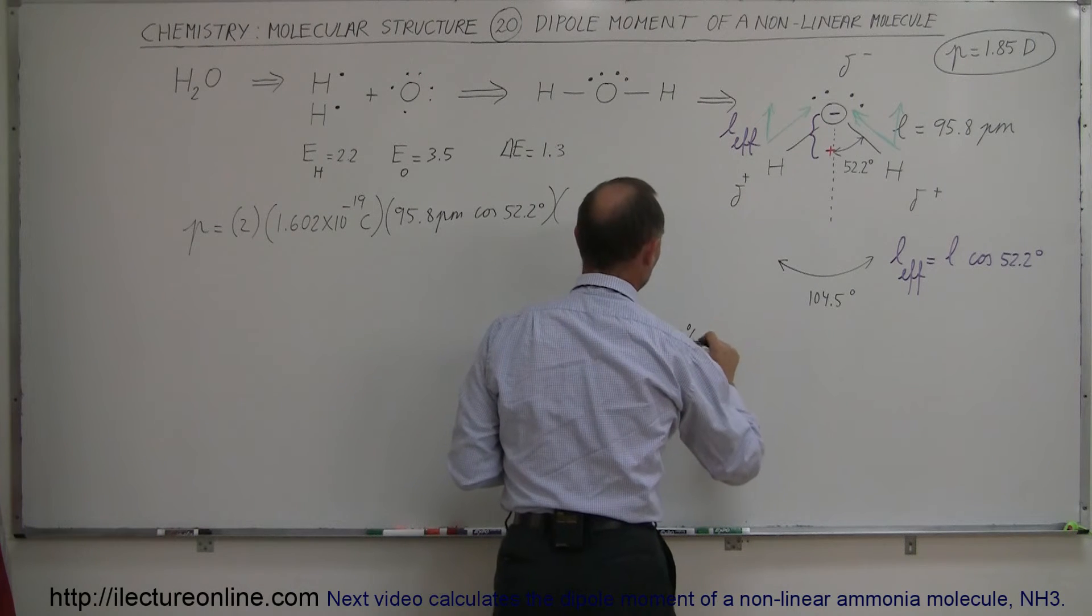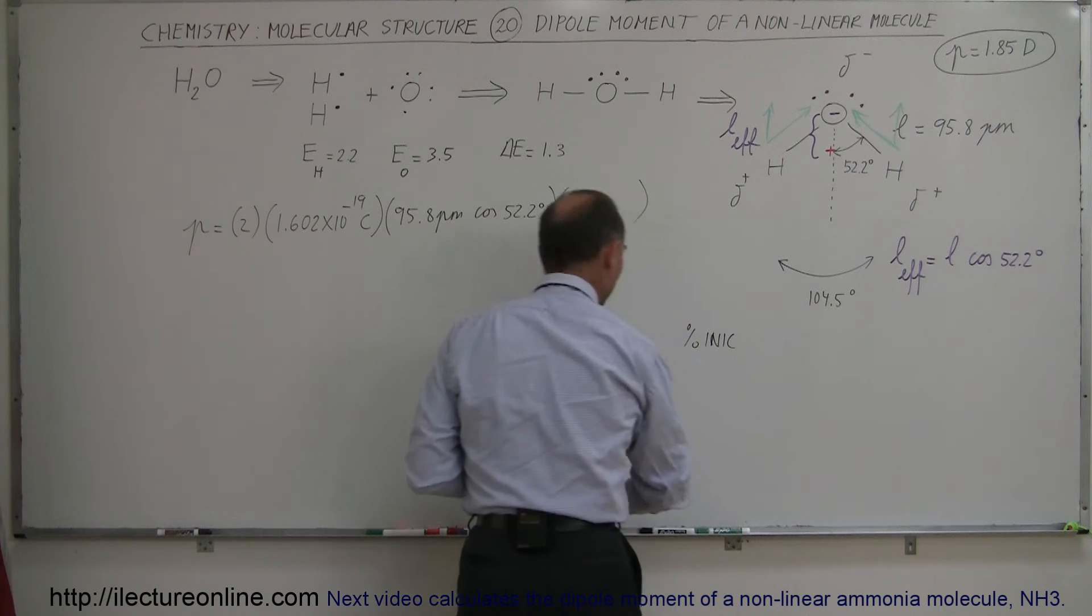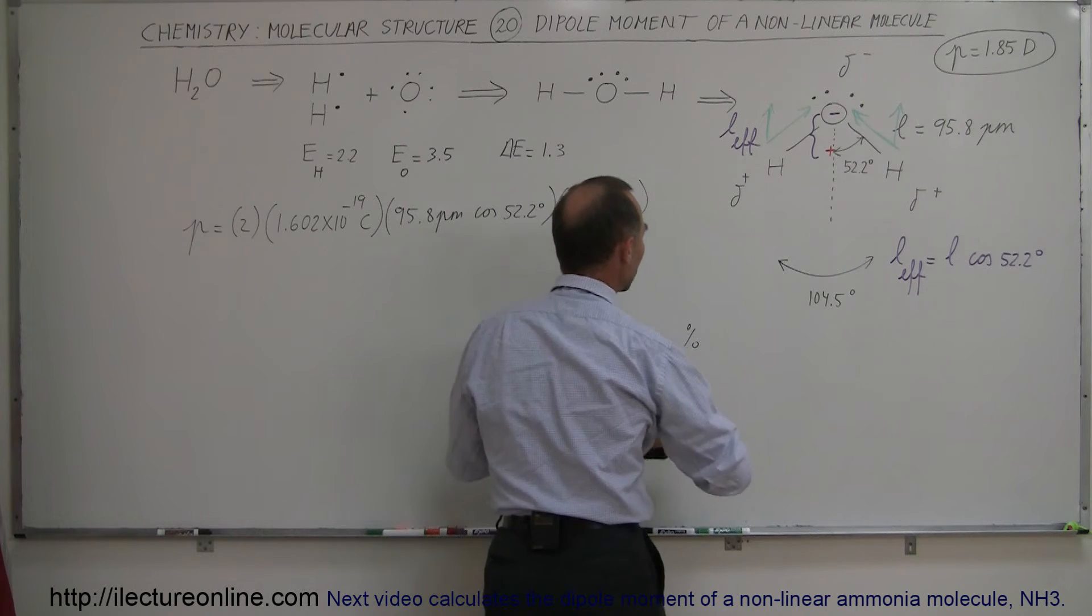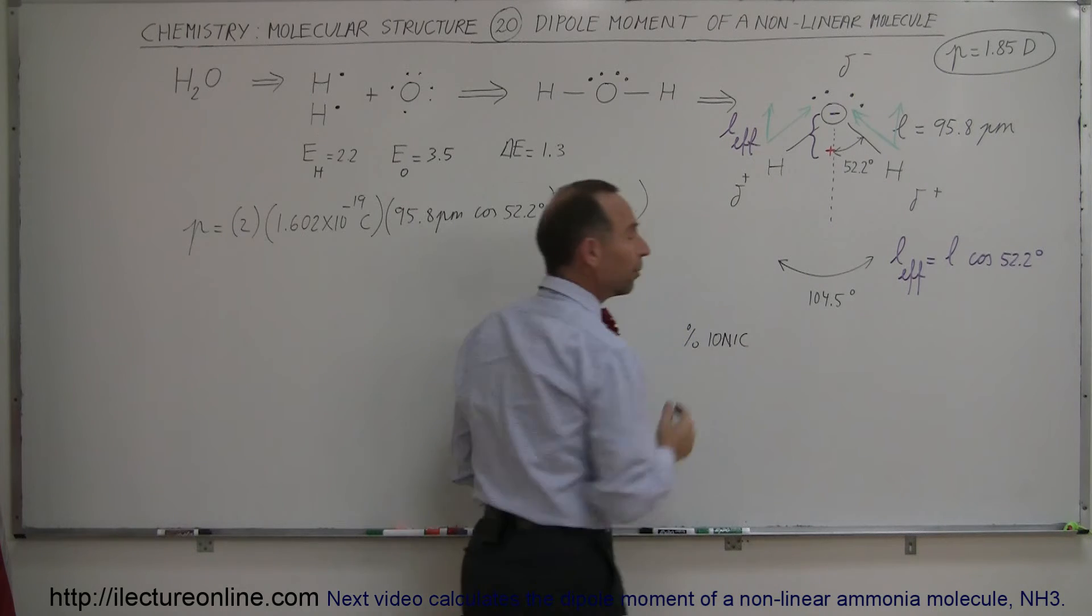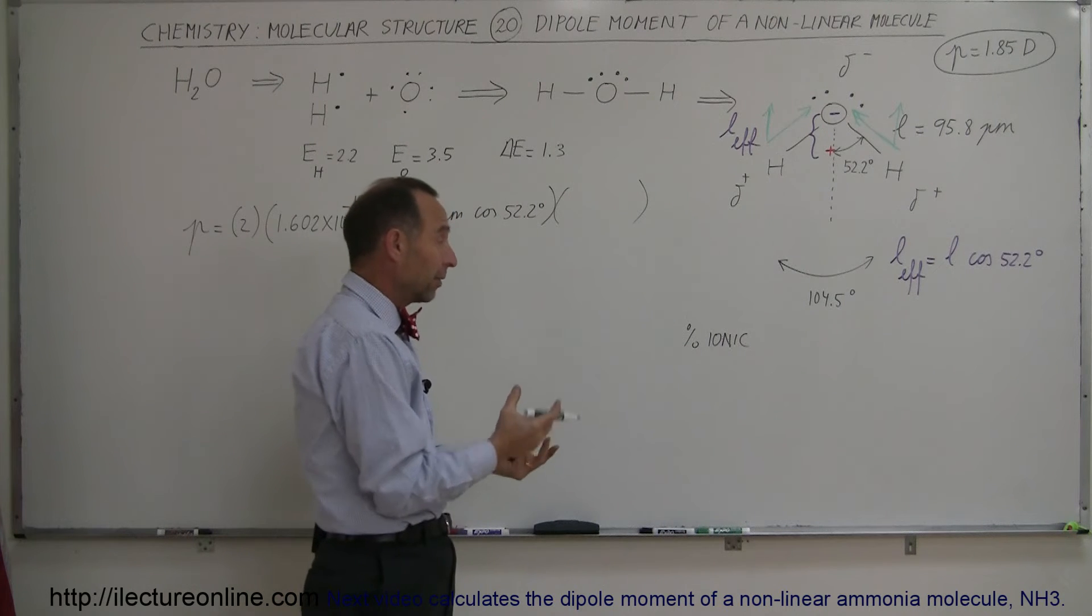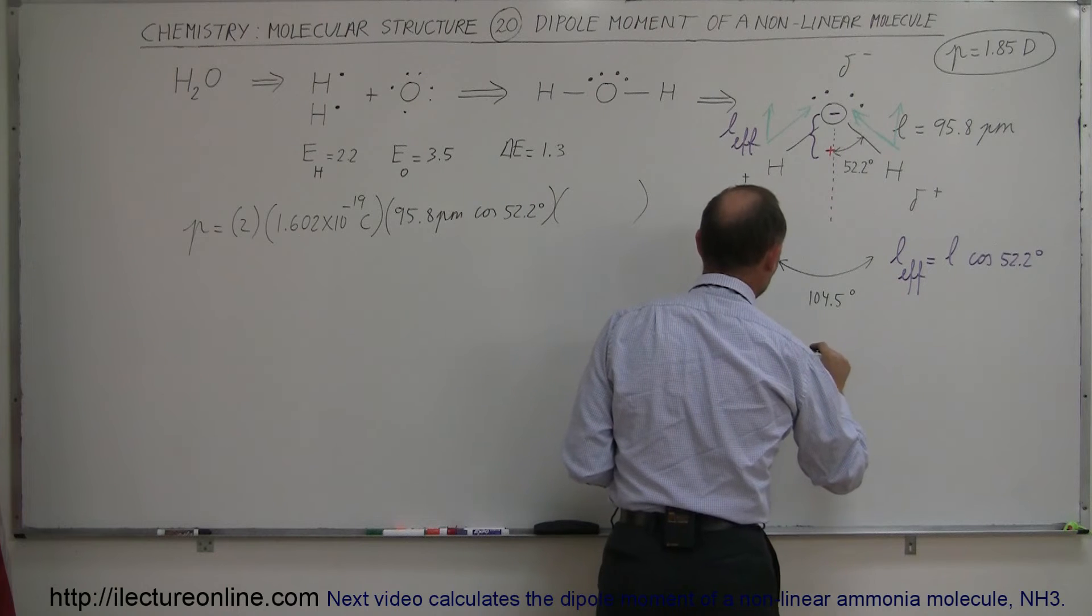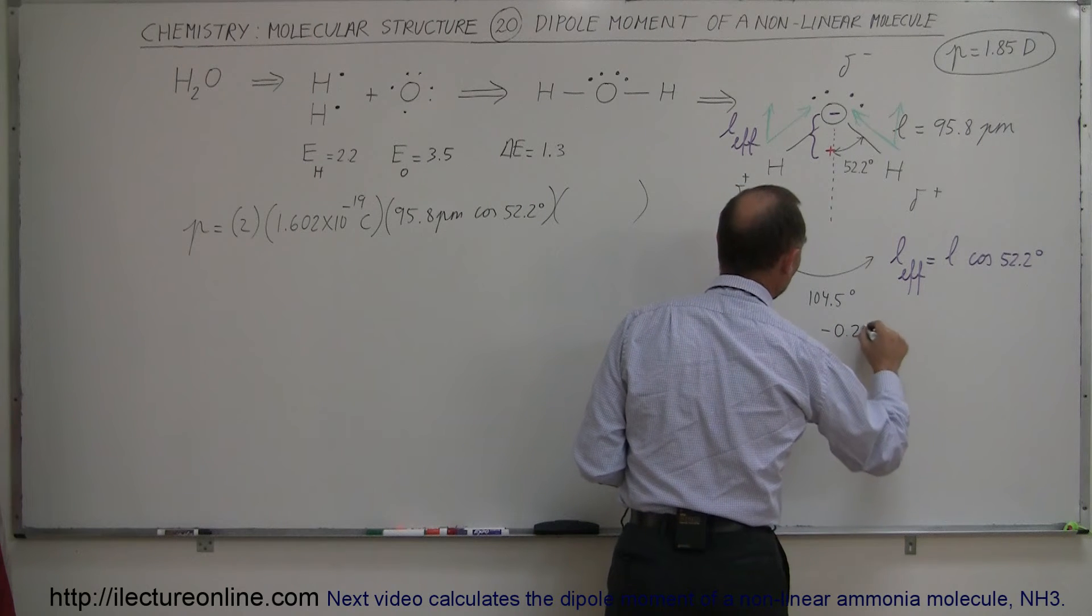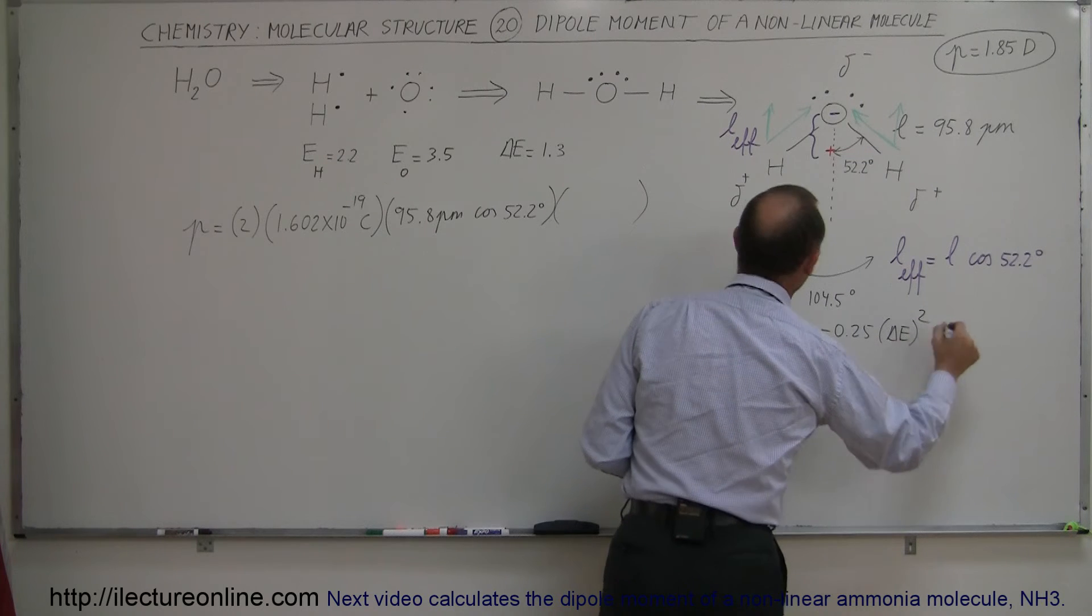Well, the equation says the percent ionic, that simply means how ionic is this bond, somewhere between 0 and 100%. The higher the number, the more ionic the bond is. The lower the number, the less ionic the bond is. And for a purely covalent bond, that percentage would be 0. So percent ionic is equal to 1 minus e to the minus 0.25 times the difference in the electronegativities squared.